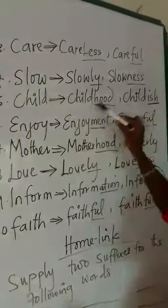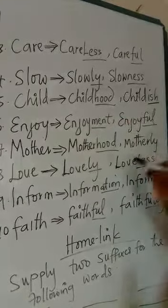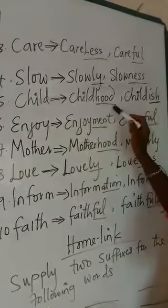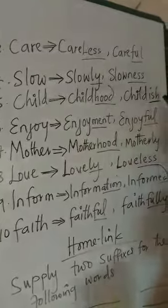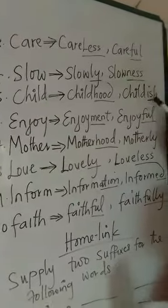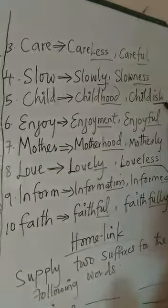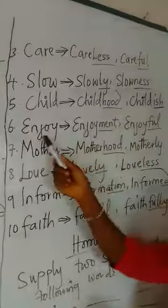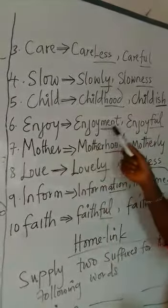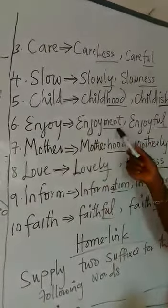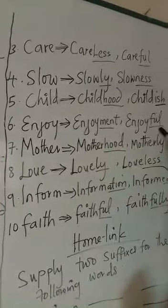Next is 'child', giving us 'childish'. The underlined part here is I-S-H — that is the suffix. This is 'enjoy', and the suffix gives us 'enjoyment'.